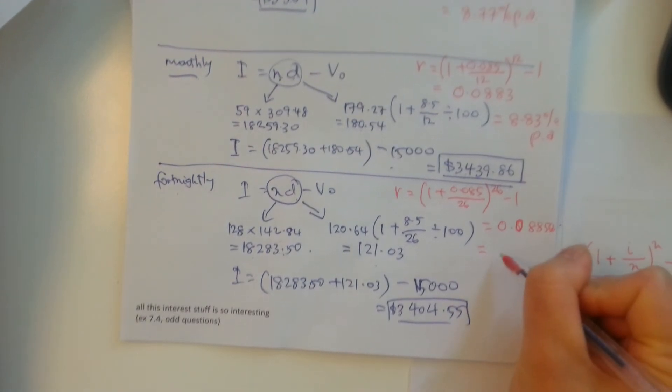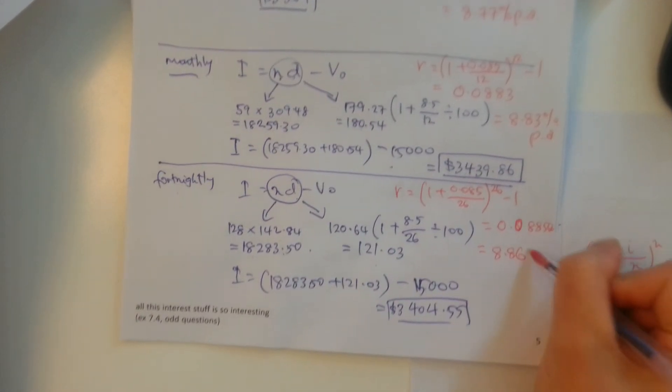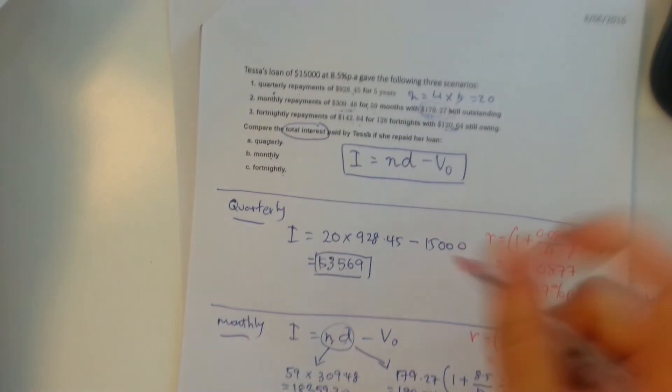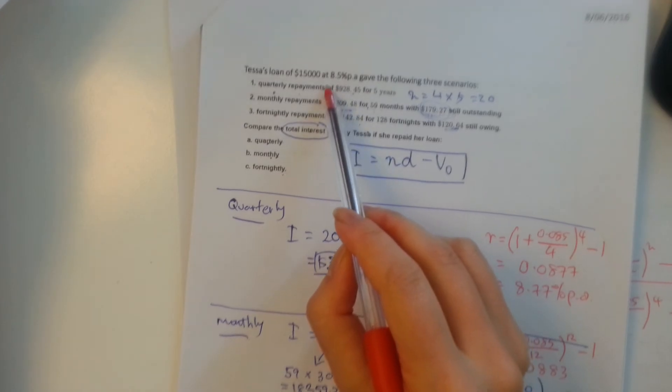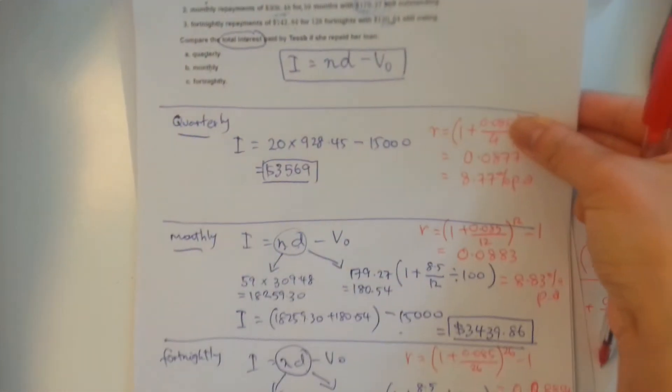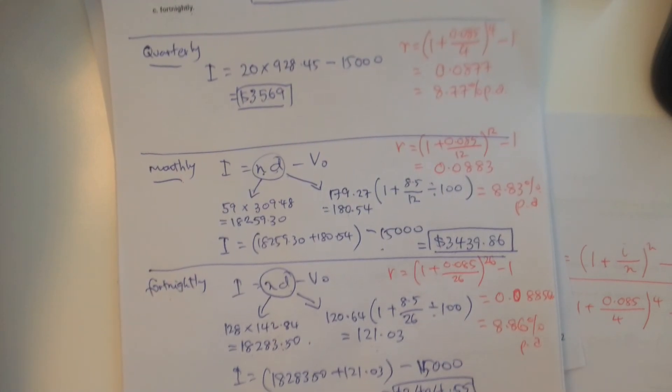so effectively the interest rate is 8.86% per annum. So even though the question originally said that the rate is 8.5% per annum, the effective rate that you're paying, when you calculate it under these conditions, are those answers that we got there. Hope you understand that, guys.